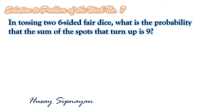This time, let us show the answer and solution to our featured problem for week number 7. Here is the problem: In tossing two six-sided fair dice, what is the probability that the sum of the spots that turn up is 9?